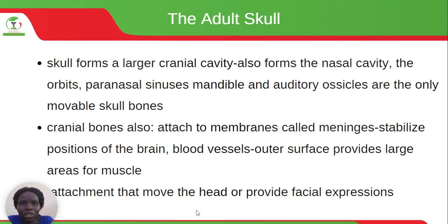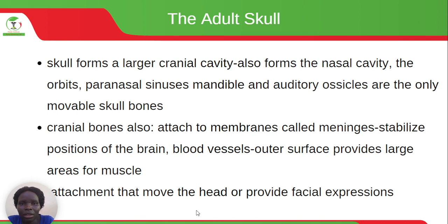The mandible and the auditory ossicles are the only movable skull bones. Cranial bones also attach to membranes called the meninges, which stabilize the positions of the brain and blood vessels. The outer surface provides large areas for muscle attachment that allow movement of the head and provide facial expressions — you are able to provide facial expressions because the muscles are attached to the bones.